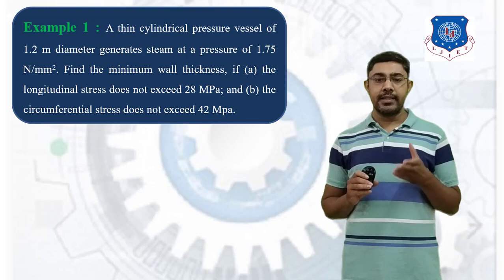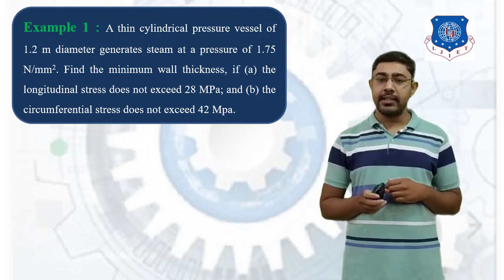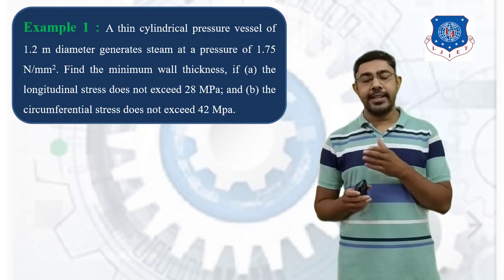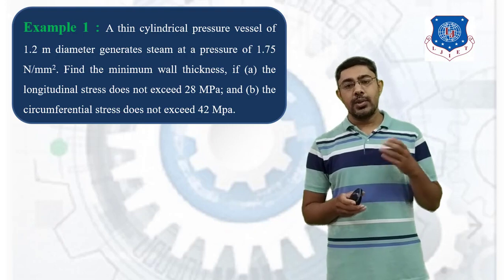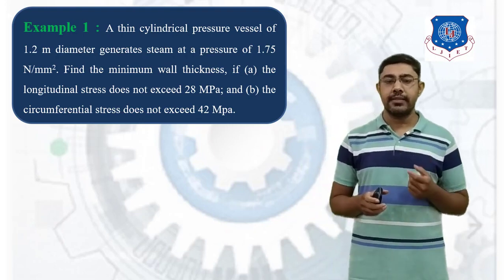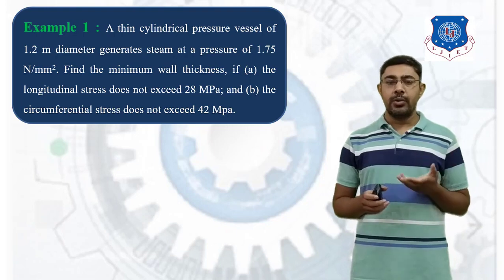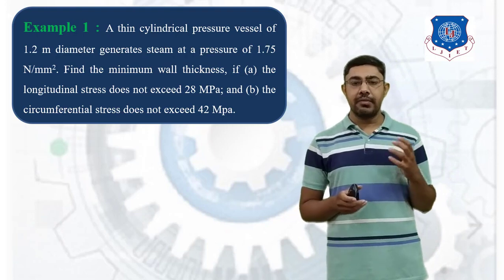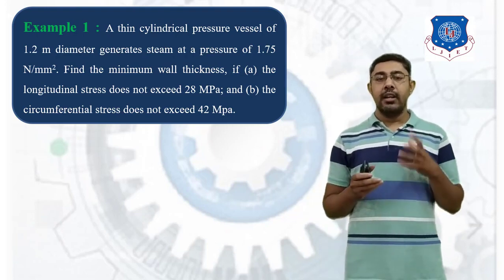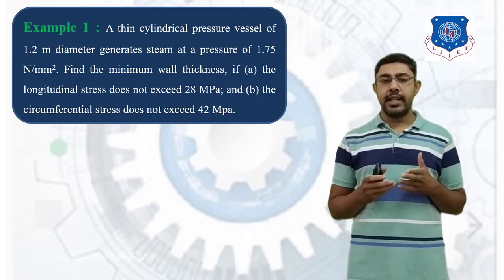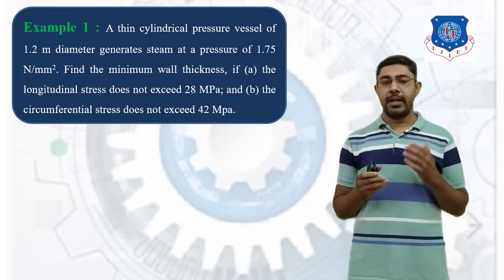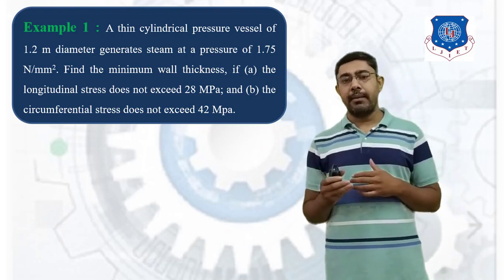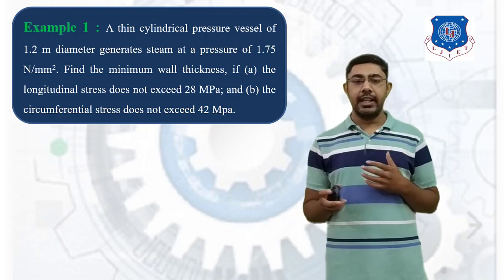The condition is: Case A, when the longitudinal stress sigma T2 does not exceed 28 MPa, and Case B, when the circumferential stress (hoop stress) sigma T1 does not exceed 42 MPa. In this example we find the minimum wall thickness by considering both stress conditions. First, let's collect the given data.